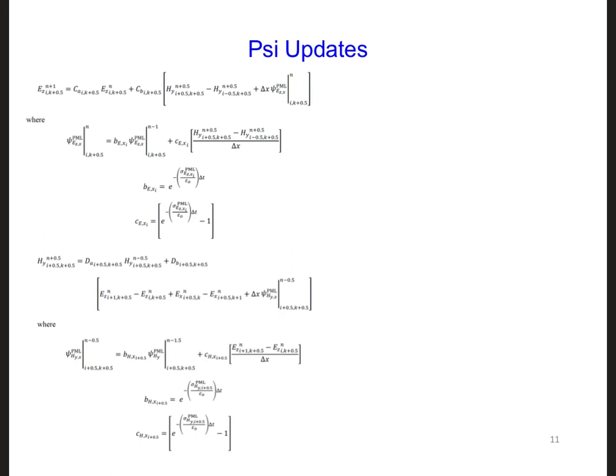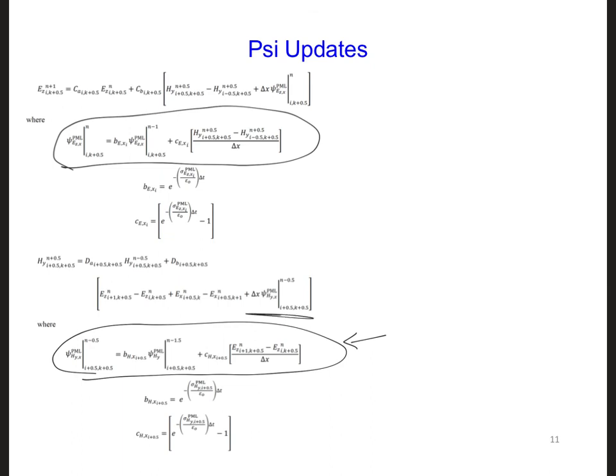The last thing we need to do is update the size. We need to implement these two equations. Spend a minute and write out how you would program these size and how you would implement them in the time-stepping loop. Let's specifically consider the psi HYX update in more detail and how we would implement it here in the HY update equation.